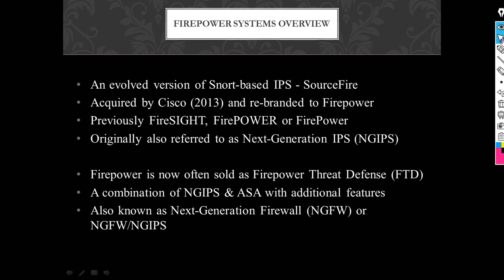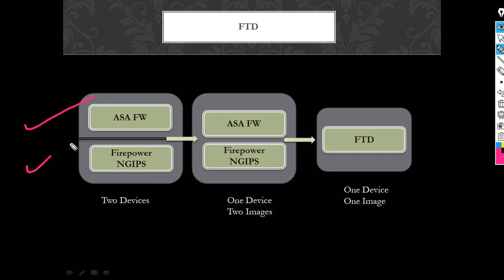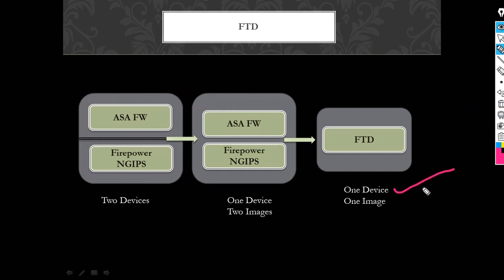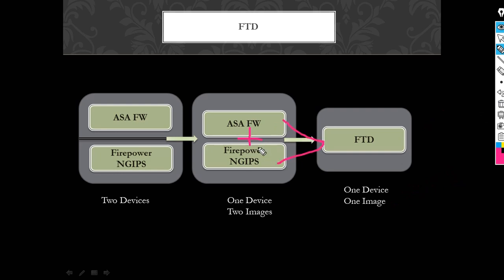Previously we had two devices with two different operating system images. The first device was our ASA firewall and the second device was our Firepower NG-IPS. But nowadays we have one device with one image — FTD — and FTD is a combination of ASA and NG-IPS.